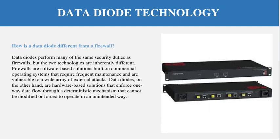How is the data diode different from a firewall? A firewall is a software-based solution and has many vulnerabilities because of that. The data diode, however, is a hardware-based solution that enforces one-way data flow through a deterministic mechanism that cannot be modified or forced to operate in an unintended way. That is why the data diode is more secure than a firewall.